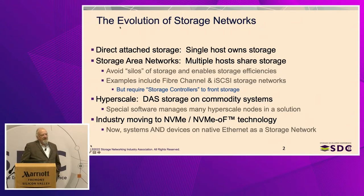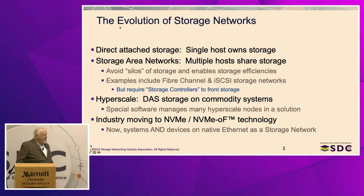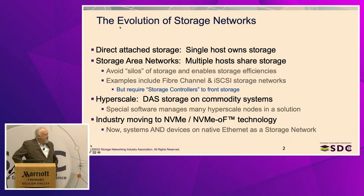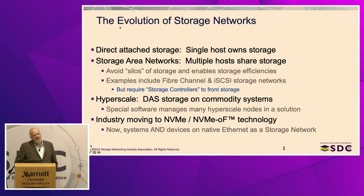SANs were created to avoid silos of storage and be able to put your data in multiple places around the network. Fibre Channel and iSCSI are storage networks, but they require storage controllers to turn what is likely a non-network technology — such as SAS, SATA, or NVMe — into a network technology such as NVMe over Fabrics or Fibre Channel.